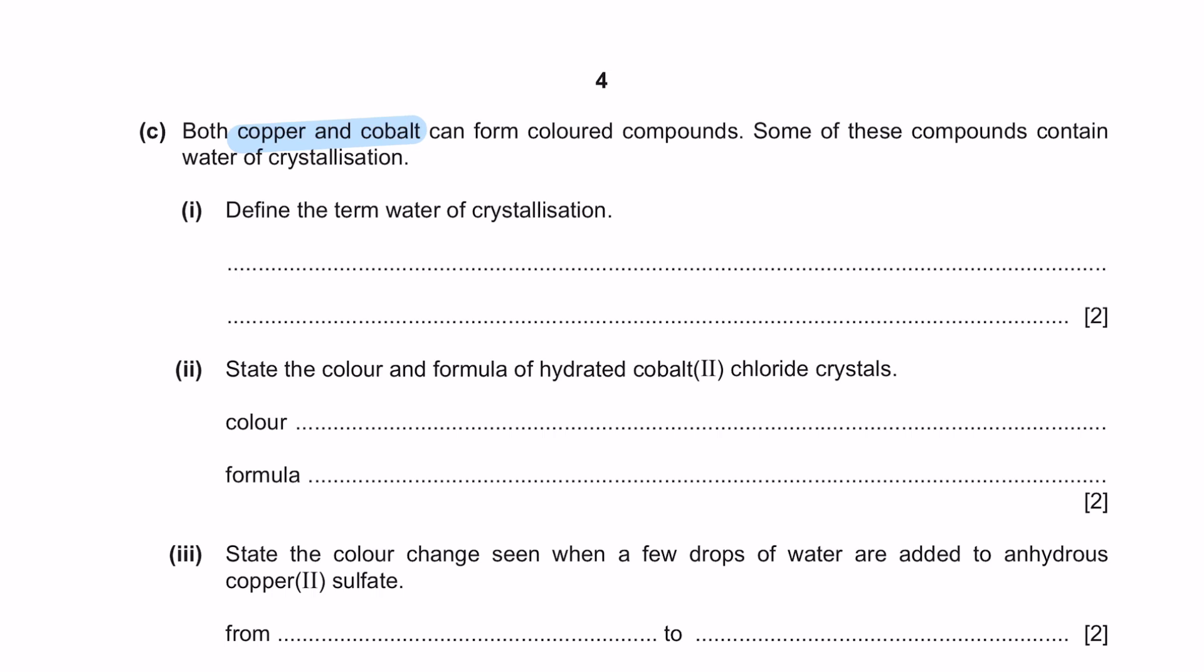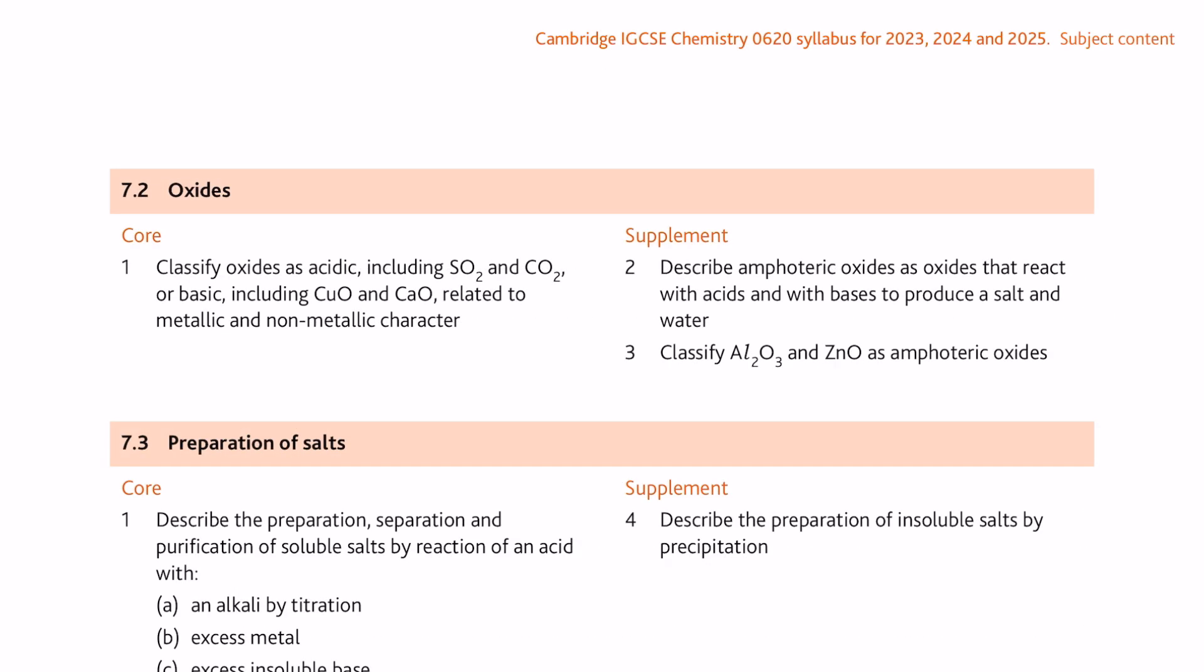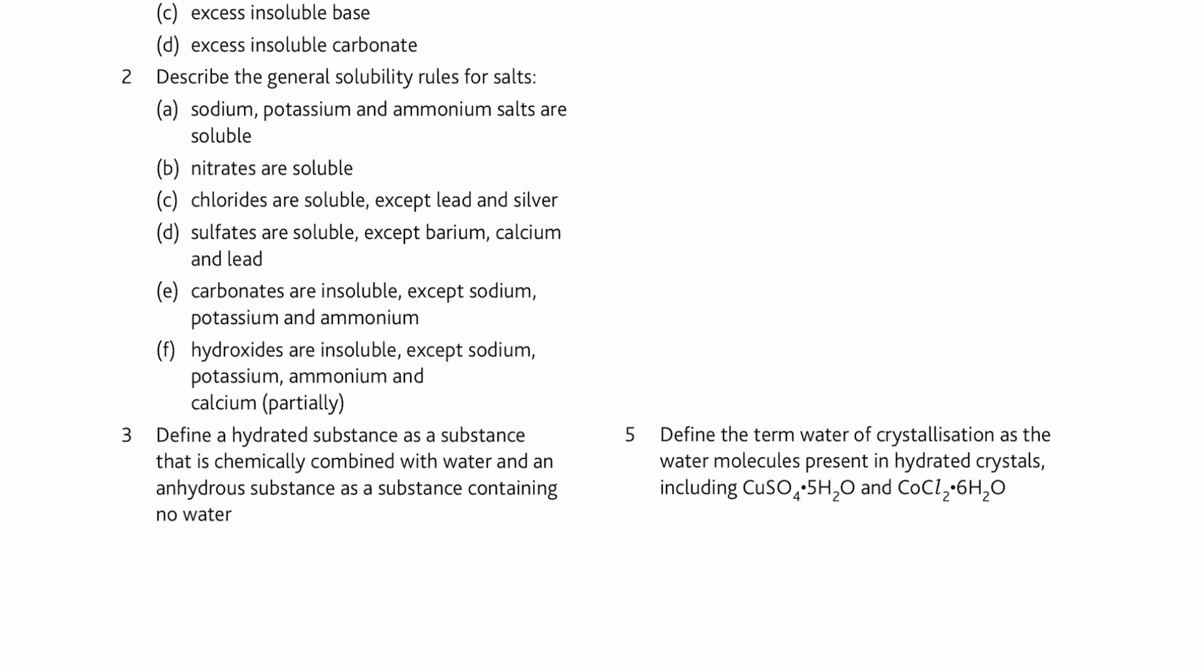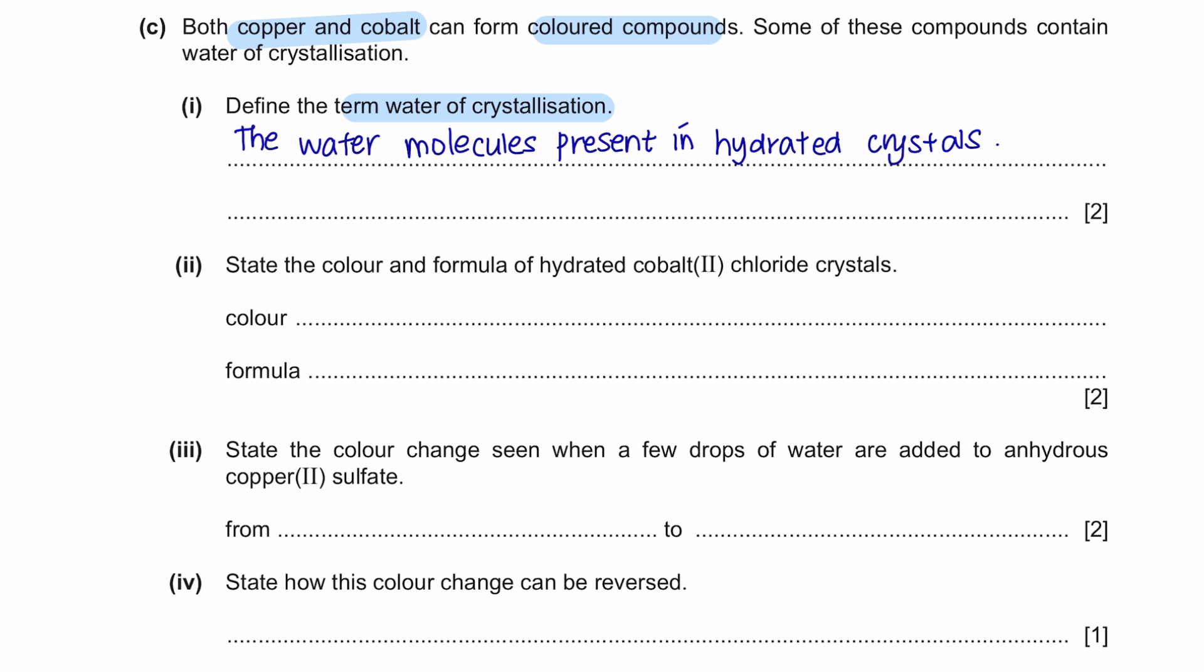Question C. Both copper and cobalt can form colored compounds. Some of these compounds contain water of crystallization. Define the term water of crystallization. Under Chapter 7, 7.3 preparation of salts, you will see that they have defined for you the term of crystallization as the water molecules present in hydrated crystals. Next, question part 2: state the color and formula of hydrated cobalt chloride crystals. Next, you need to state the color change seen when a few drops of water are added to anhydrous copper sulfate.